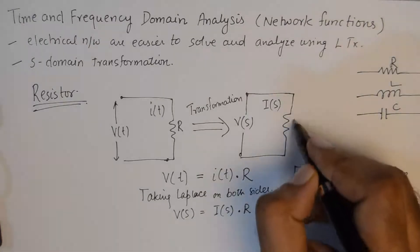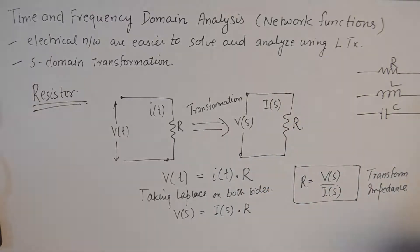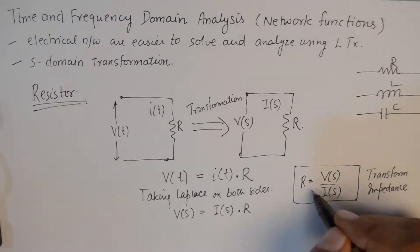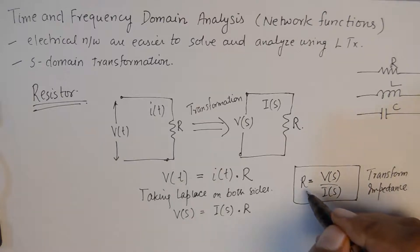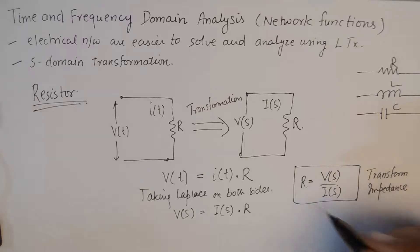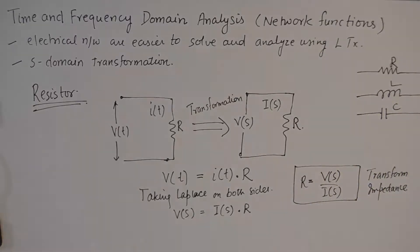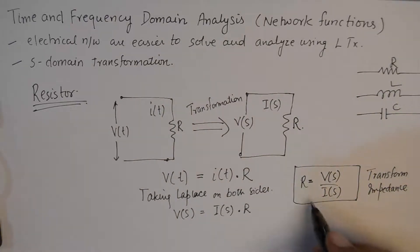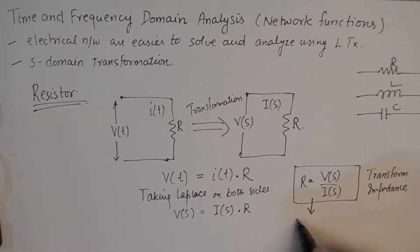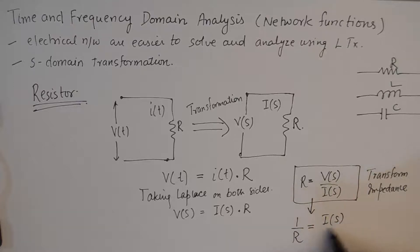The transform impedance in this particular case is the resistor itself because the value of the resistor is not frequency dependent, so no additional frequency domain operator like s will feature here. Similarly, from this relation we can derive that 1/R equals I(s)/V(s), which is G or conductance.